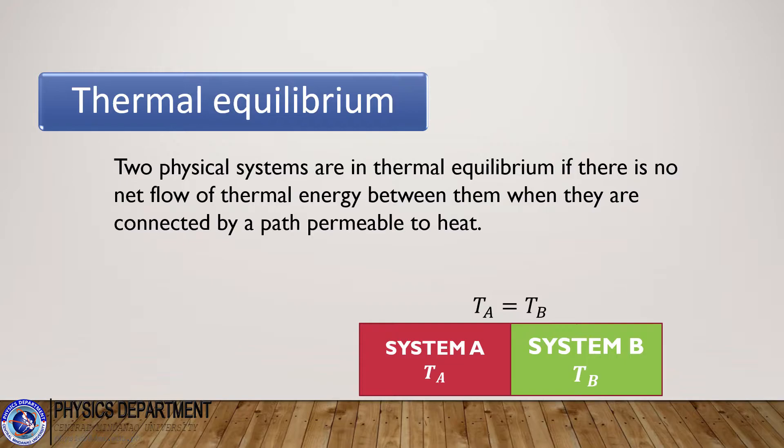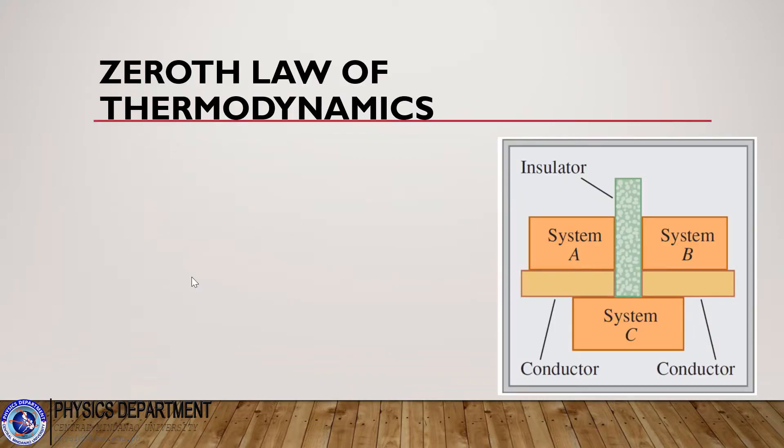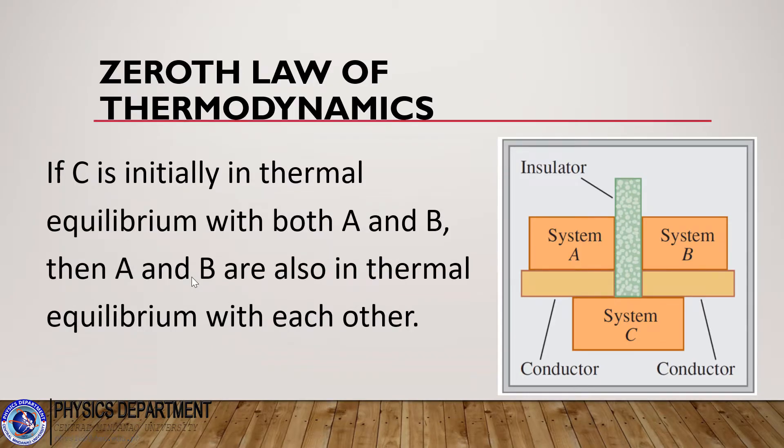So, meaning the temperature T_A must be equal to the temperature T_B, and that is thermal equilibrium. Thermal equilibrium also obeys the zeroth law of thermodynamics. So we have to take note that there are three laws of thermodynamics. The zeroth law of thermodynamics states that if C is initially in thermal equilibrium with both A and B, then A and B are also in thermal equilibrium with each other.